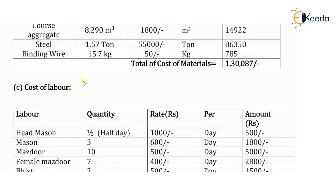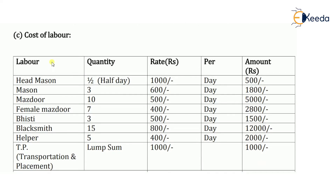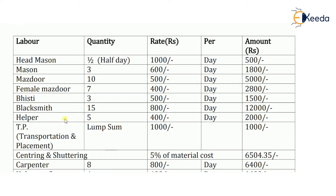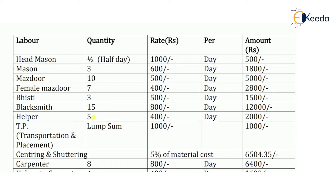Now let's calculate the cost of labor for RCC work with steel for 10 meter cube. A table is prepared with labor type, quantity, rate per day (8 hours), and amount. Labor required: head mason 0.5, mason 3, mazdoor 10, female mazdoor 7, bhisti 3, blacksmith 15 (for bending and working with steel), and helper to blacksmith 5.